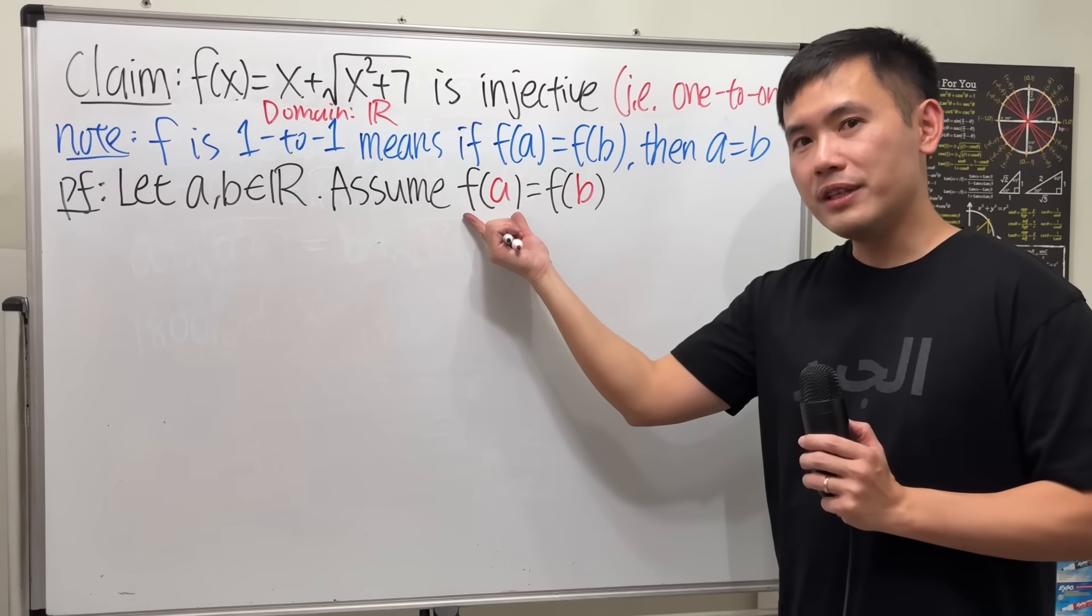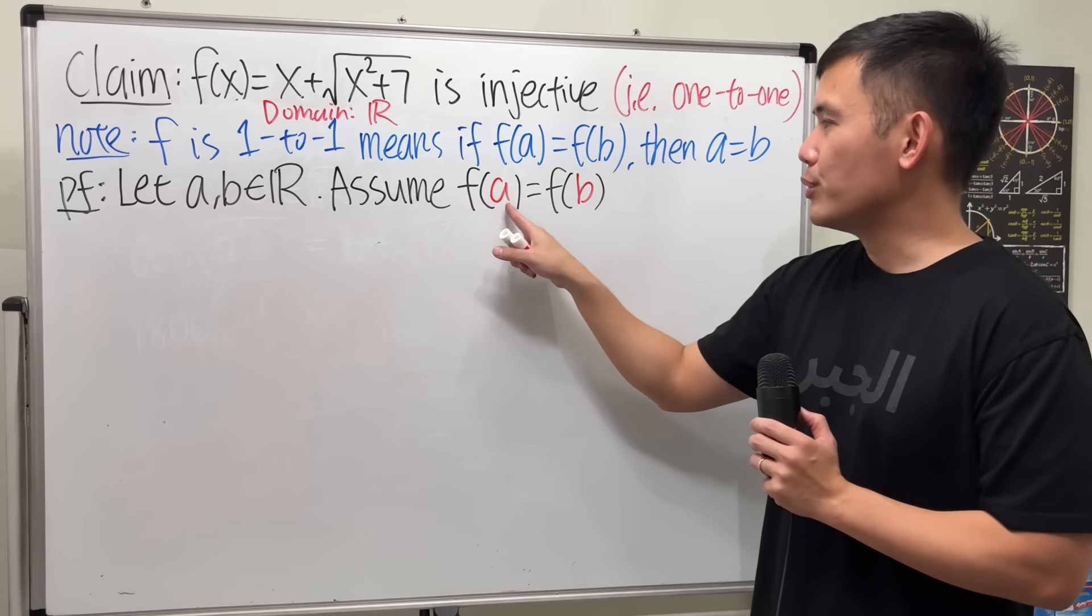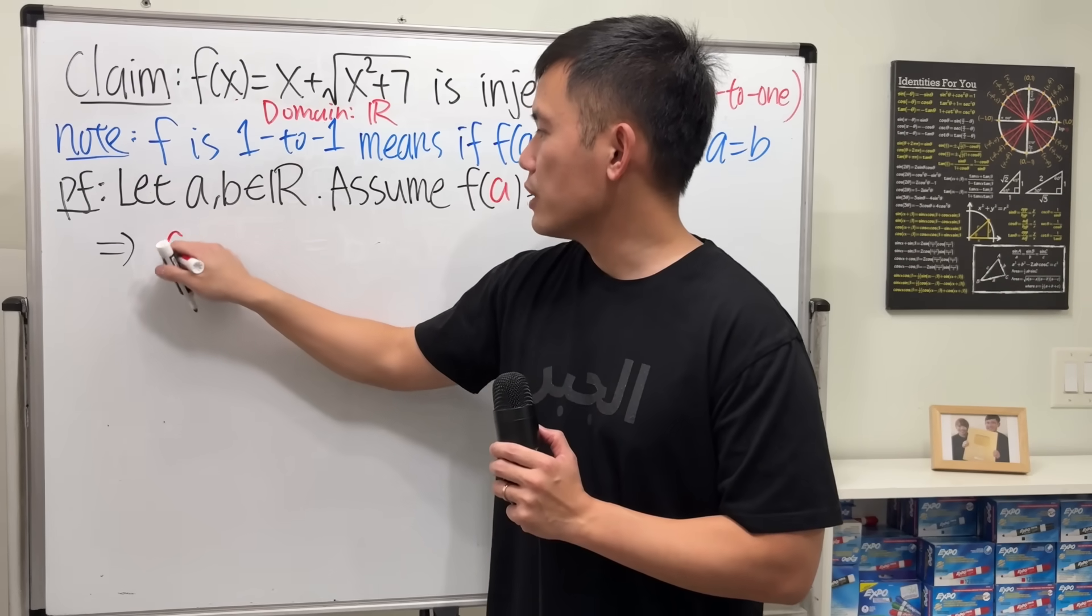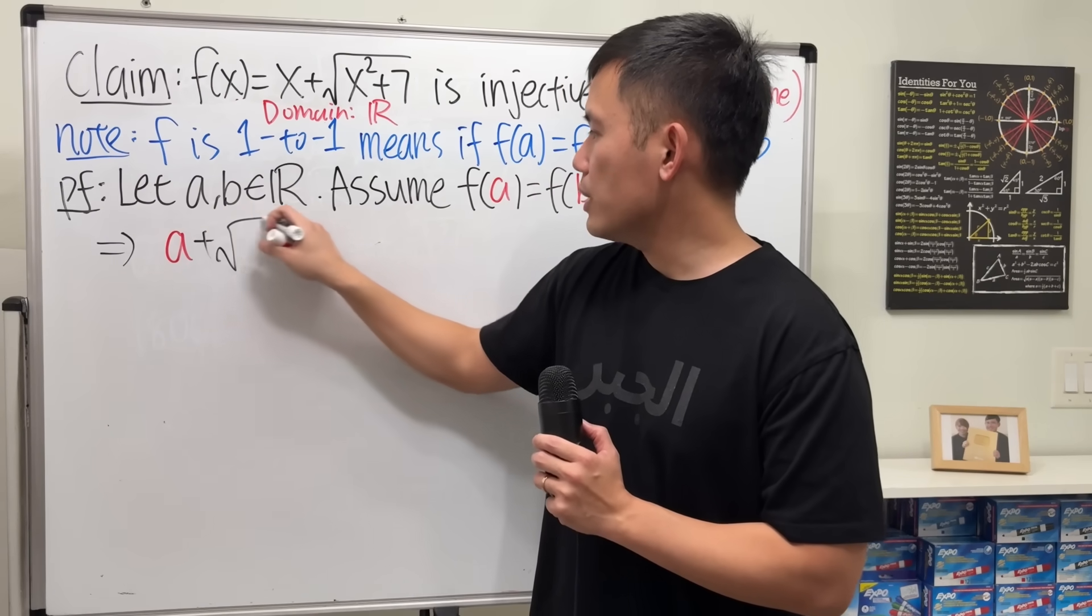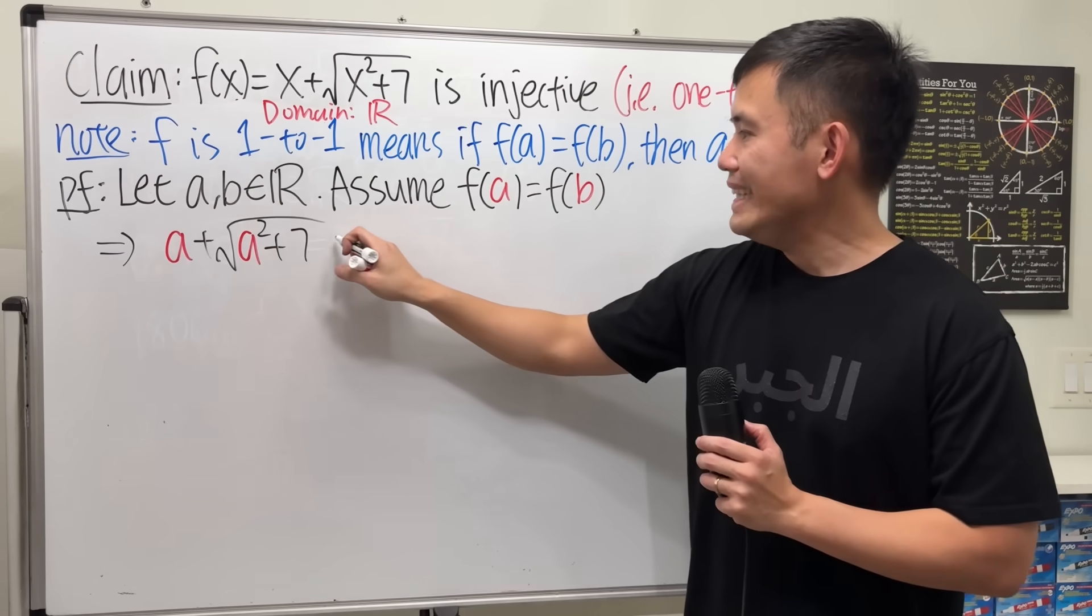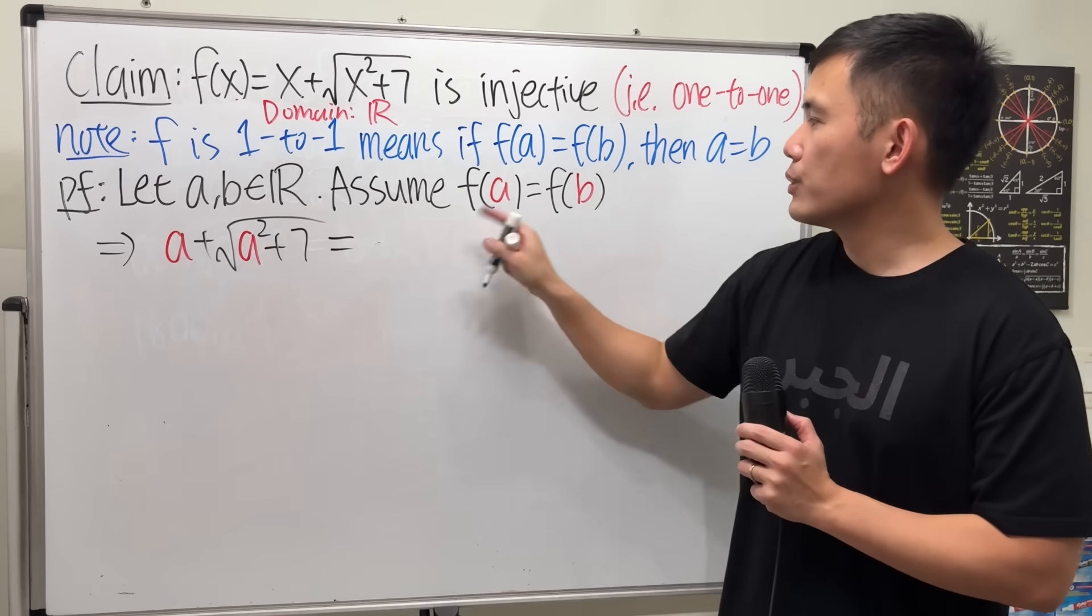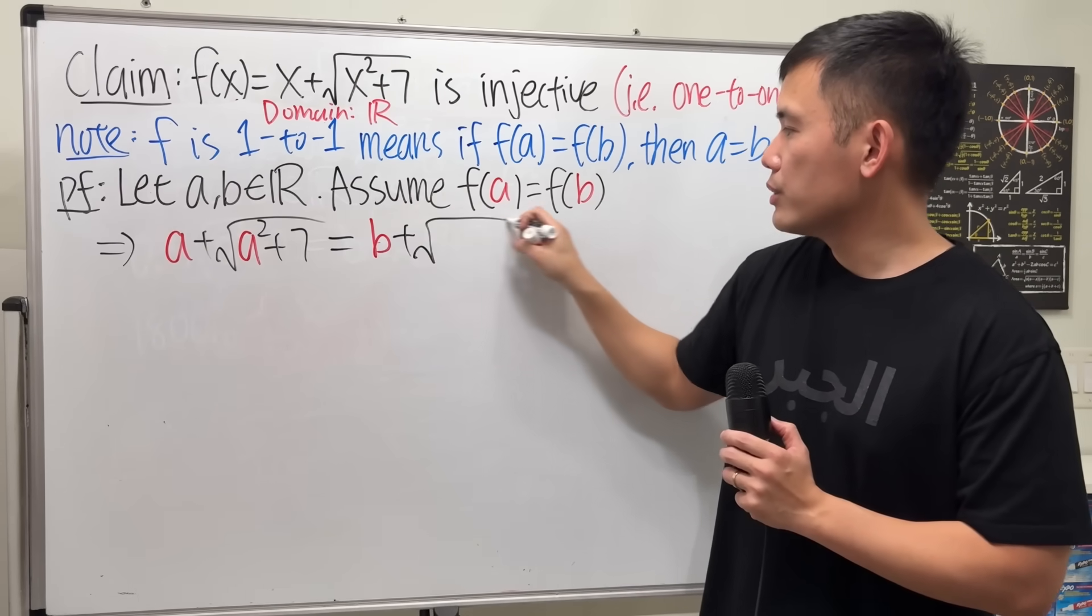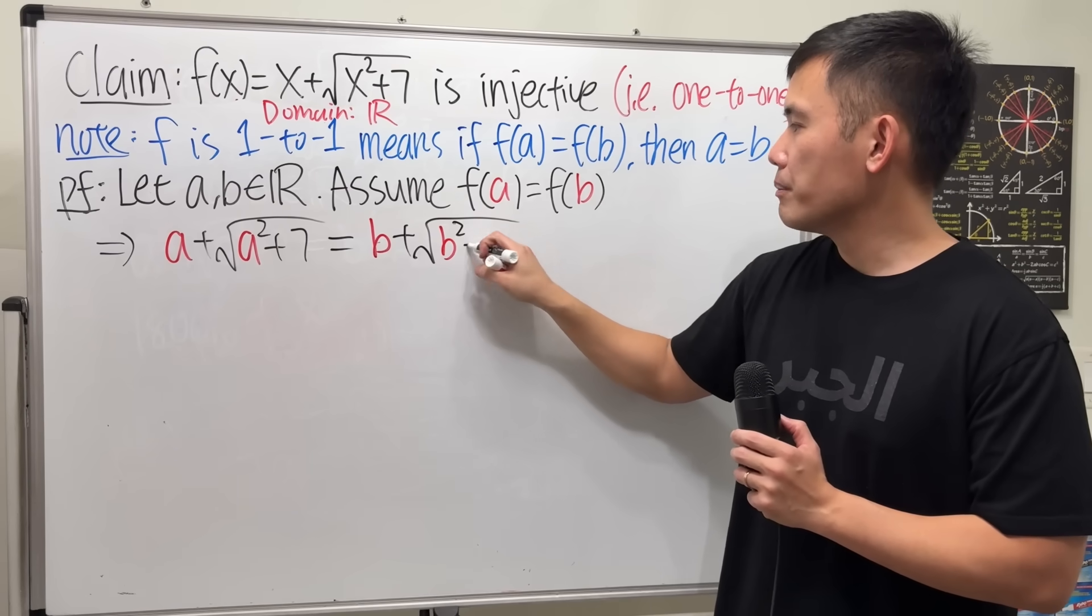So, what does this mean? Well, we just have to put a into all the x's. So that means we have the equation a plus square root of a squared plus 7. Make that equal to this, which is b into all the x's. So b plus square root of b squared plus 7.